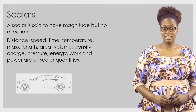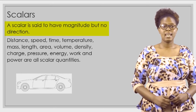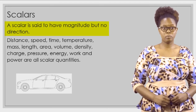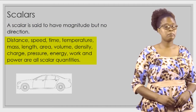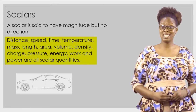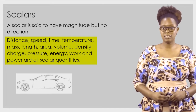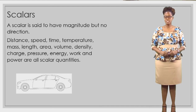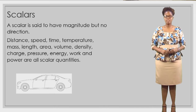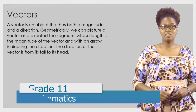Before we start exploring what vectors are, what exactly are scalars? Because sometimes vectors and scalars come hand in hand. A scalar is said to have magnitude but no direction. Distance, speed, time, temperature, mass, length, area, volume, density, charge, pressure, energy, work, and power are all scalar quantities.